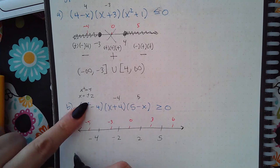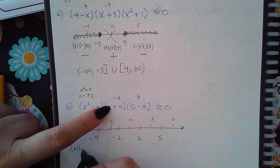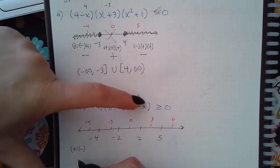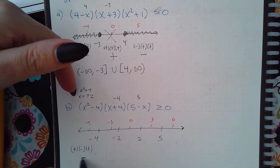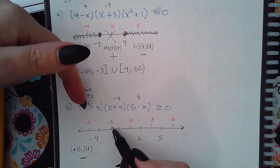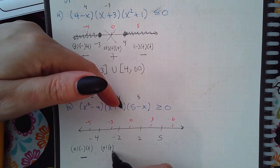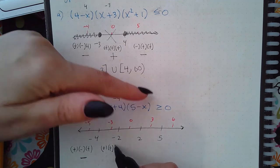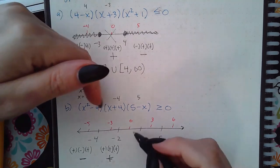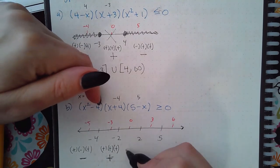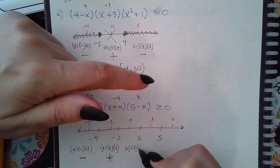Negative 5 squared is positive 25, 25 minus 4 will be a positive number. Negative 5 plus 4 is a negative 1. 5 minus negative 5 will be the same as 5 plus 5 which is a positive 10. When I multiply those in the end I end up with negative here. In negative 3, that's going to be positive 9 minus 4 which is a positive. Negative 3 plus 4 is a positive 1. 5 minus negative 3 is 5 plus 3 which is also a positive. So I get a positive for this interval. 0, 0 squared is 0 minus 4 is negative. 0 plus 4 is positive. 5 minus 0 is positive. If I multiply those I get a negative for this region.